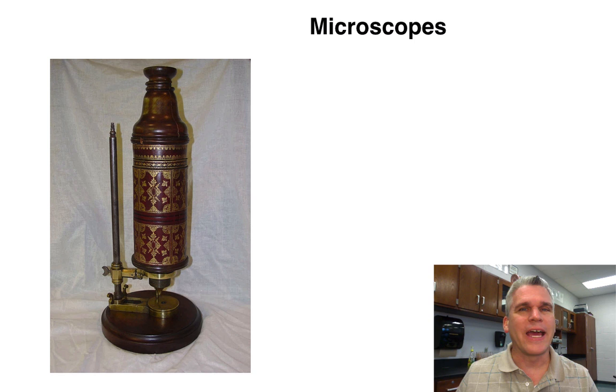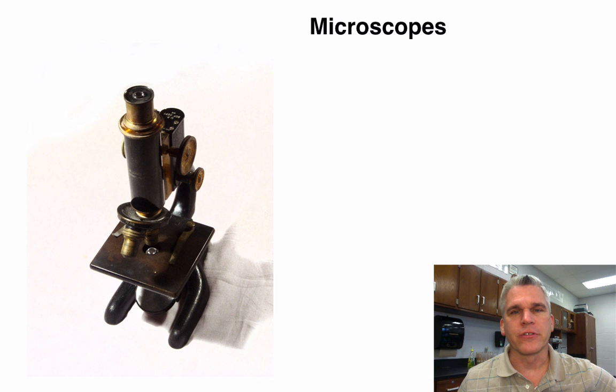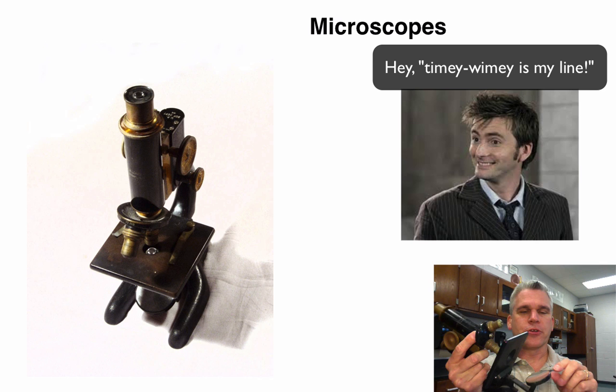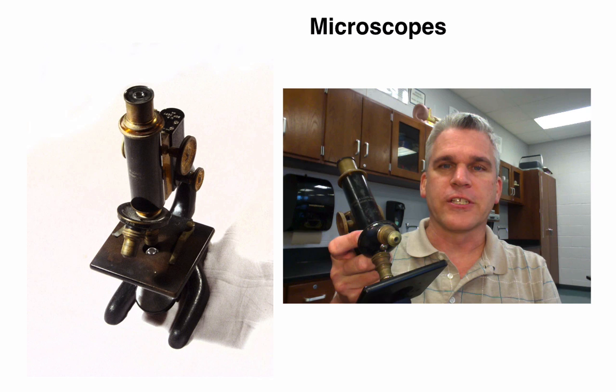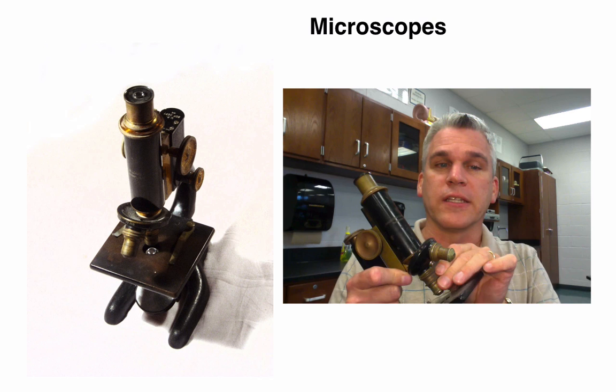We're going to be using some compound microscopes. Here we see in the picture an old-style microscope that uses a mirror that reflects light onto the slide so that we can view it. It has different objectives — this one has two: a high power and a low power. It's very efficient to use.